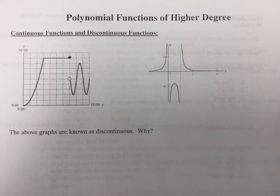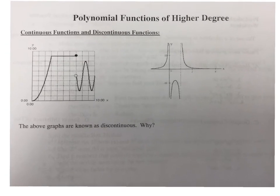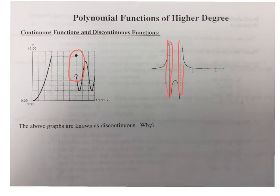In your notes, it says that there are two types of functions: continuous and discontinuous functions. These two graphs shown are both discontinuous because the values for the domain jump right here. This one has an asymptote affecting the domain. When graphs don't continuously move on, they are not smooth, continuous curves — they jump, making them discontinuous.